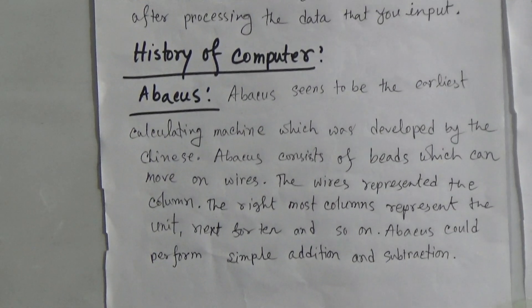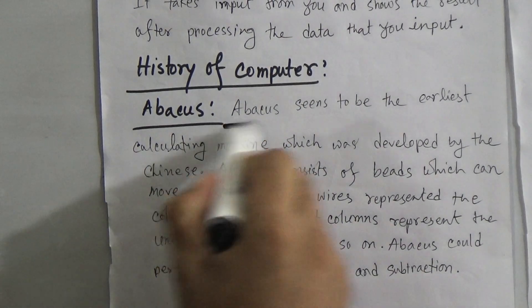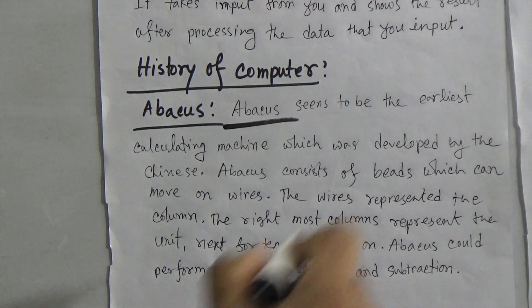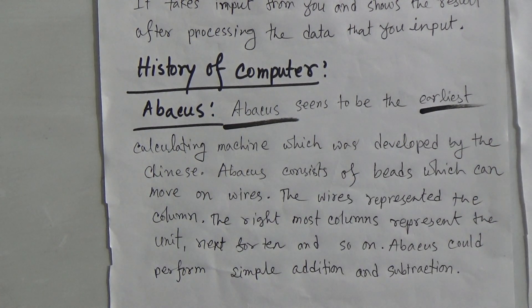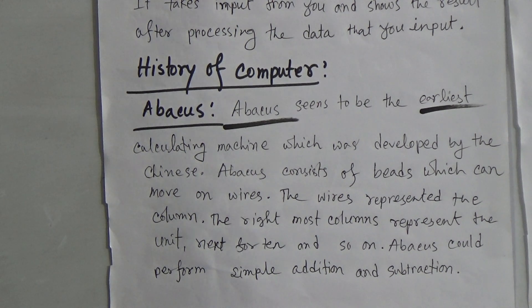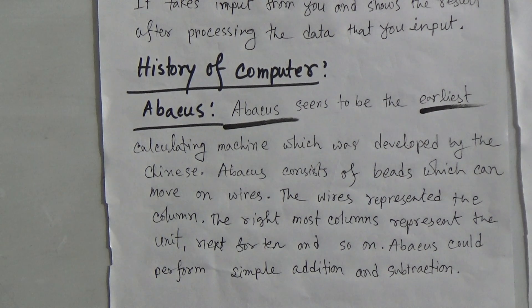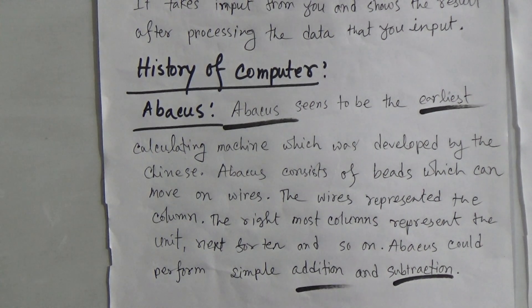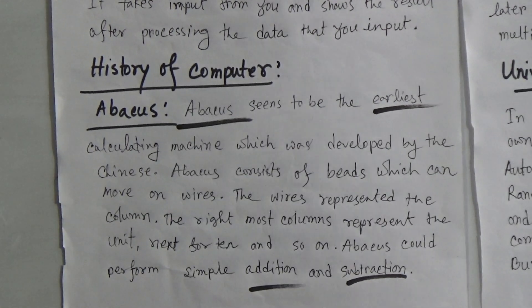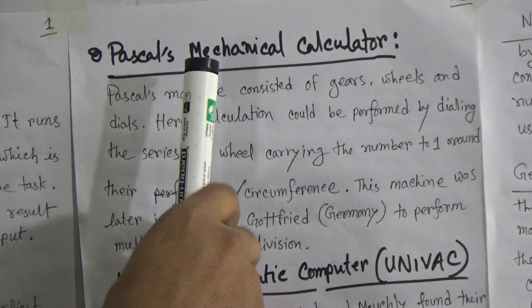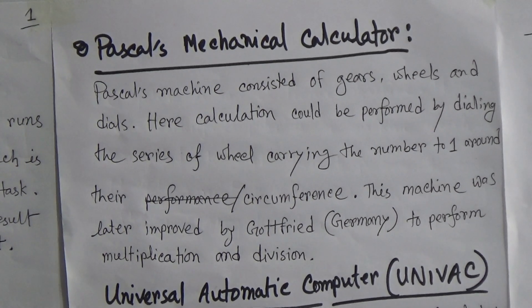Now we will discuss the history of computer. First, if we talk about the history of computer, we have to talk about the abacus. The abacus seems to be the earliest calculating machine, which was developed by the Chinese. Abacus consists of bits which can move on wires, representing columns — the rightmost column represents units, the next represents tens, and so on. The abacus could perform simple addition and subtraction.